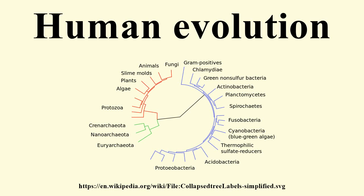Before Darwin, the word Homo, the name of the biological genus to which humans belong, is Latin for human. It was chosen originally by Carolus Linnaeus in his classification system. The word human is from the Latin humanus, the adjectival form of Homo. The Latin Homo derives from the Indo-European root dhghem, meaning Earth.